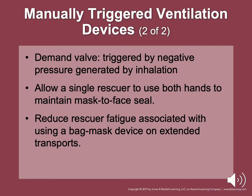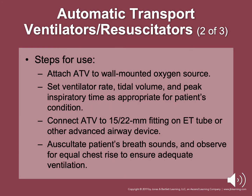Automated transport ventilators: attach to a wall-mounted oxygen source, set the ventilator rate, tidal volume, and peak respiratory pressure appropriate for the patient's condition. Connect the ATV to the 15/22 mm fitting on the tracheal tube or other advanced airway device. Observe for equal rise and fall of the chest. Most models have adjustments for respiratory rate and tidal volume. Pressure release valves can result in hypoventilation. They are considered volume-cycle, rate-controlled ventilators set at a fixed rate. Some models may require an external power source and have a pressure relief valve which can result in hypoventilation with poor lung compliance.